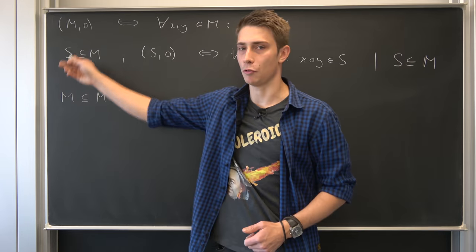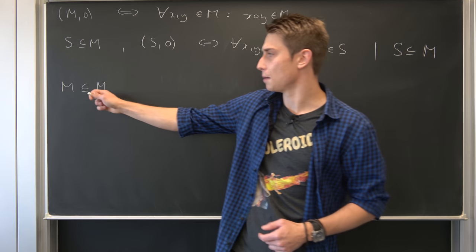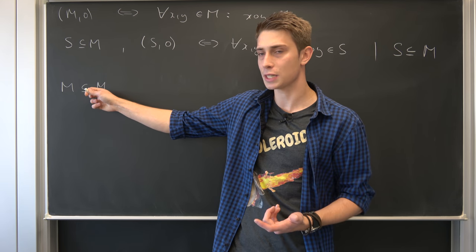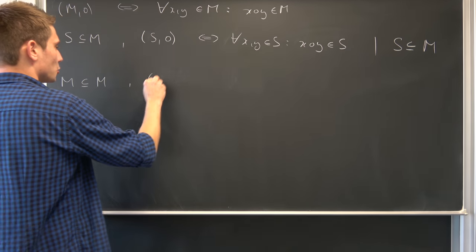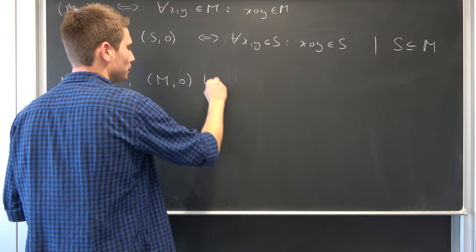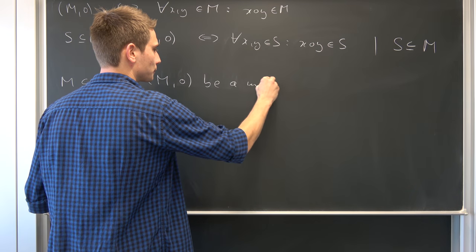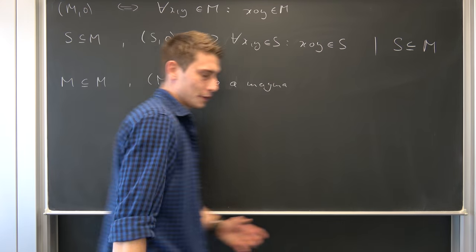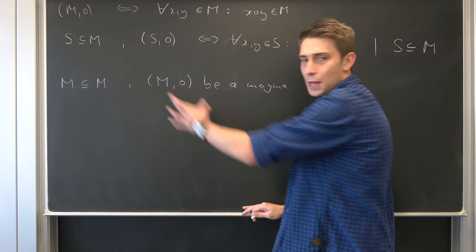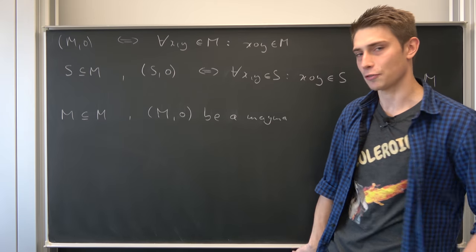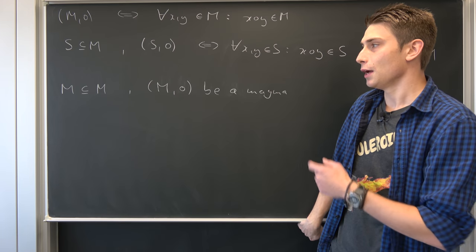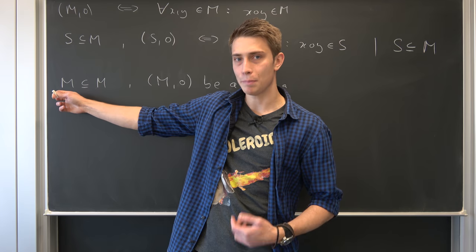And also we want this mother set M right here together with a binary operation circle to be a magma. So we want to have M and the circle to be a magma, meaning this pair right here is closed under the operation. Definition of a magma.